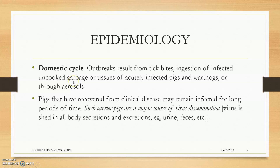The second epidemiological cycle is the domestic cycle, happening in the field or farm setting. Outbreaks begin from tick bites, and also from ingestion of uncooked garbage or tissues of affected pigs eaten by normal pigs, or through the meat of affected and dead animals, or through aerosols.